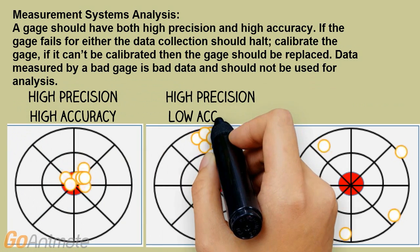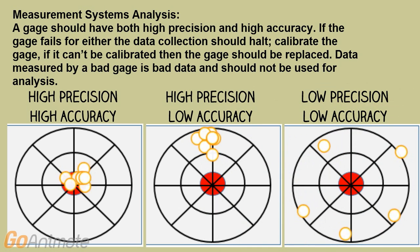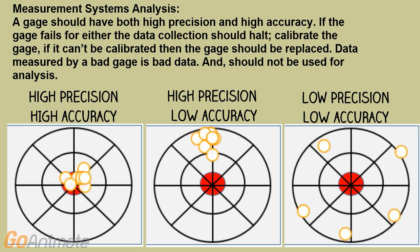A gauge should have both high precision and high accuracy. If the gauge fails for either, the data collection should halt. Calibrate the gauge; if it can't be calibrated, then the gauge should be replaced. Data measured by a bad gauge is bad data and should not be used for analysis.